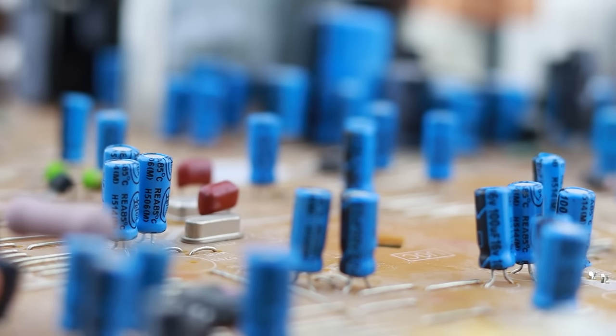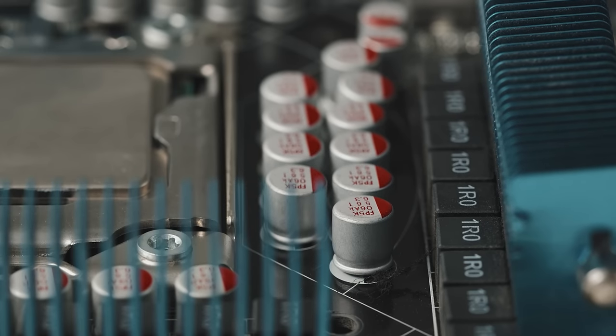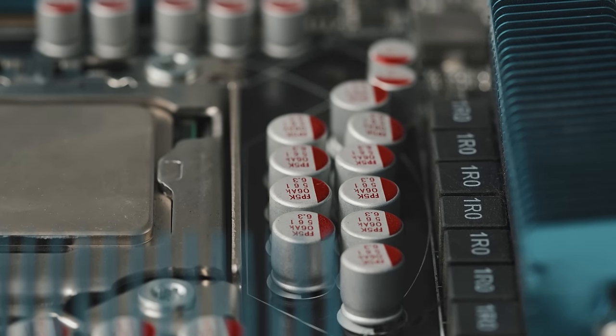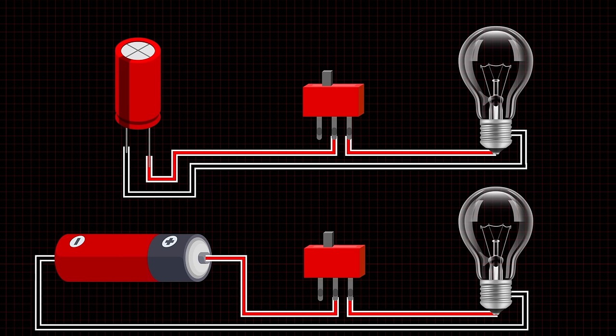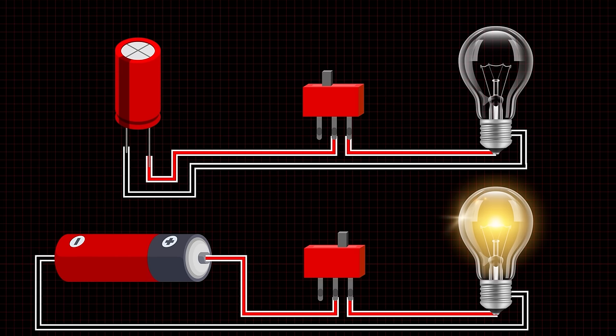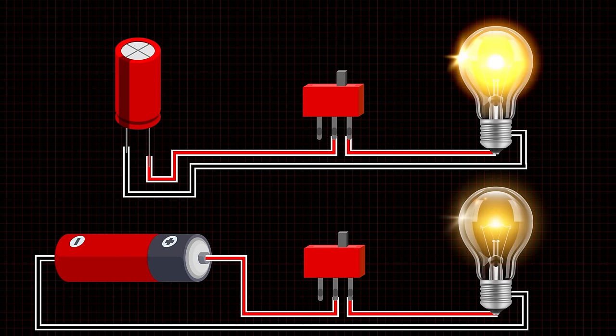Capacitors, occasionally referred to as condensers or condensators, are electronic components that can store an electrical charge similar to batteries. However, while batteries release their charge slowly, capacitors charge and release energy in a more rapid manner.